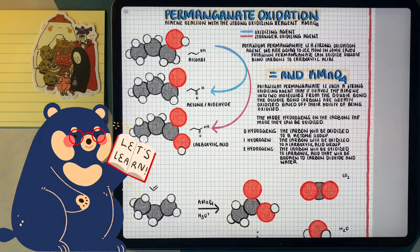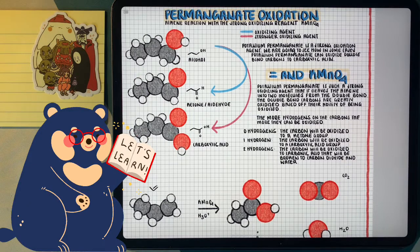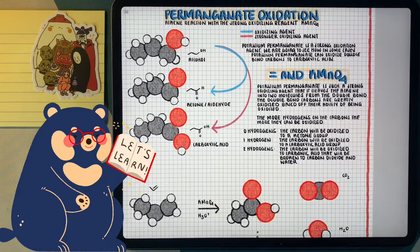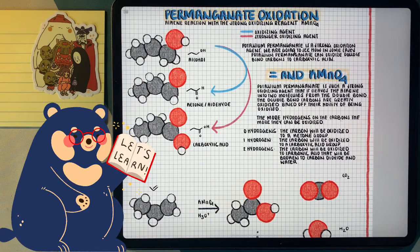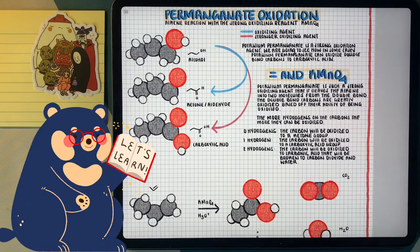Examine the example. In this case, we have a terminal alkene. And because we have a terminal alkene, the double bond carbon to the furthest right, is going to be oxidized fully to carbon dioxide.